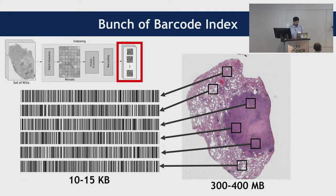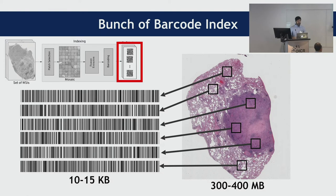If we add all of these steps, what we end up with is: given a 300 or 400 MB slide — up to 2 GB — we get an index of around 10 to 15 KB. This is the index, which is the bunch of barcodes. This is what we utilize to search a scan in its entirety.